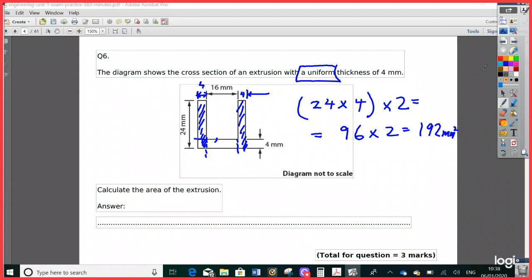That leaves me with this red section here, which is 16 by 4. So 16 by 4 is gonna give me 64 millimeters squared. Add them all up: 192 plus 64 equals 256. Yeah, that's the correct answer.